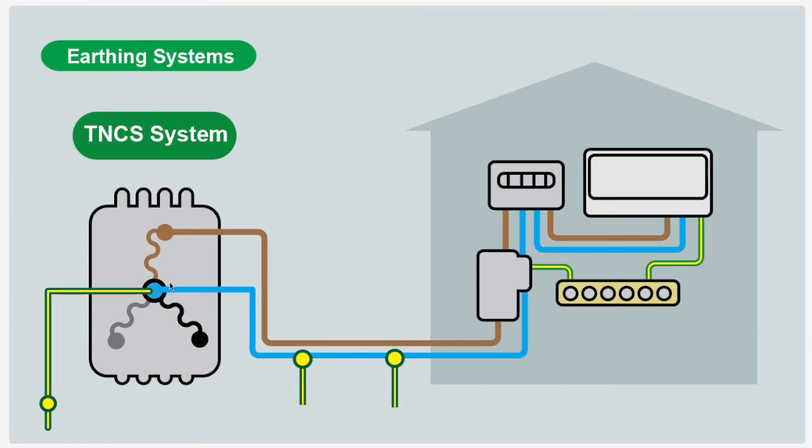The neutral is combined back at the star point of the transformer to earth as a reference to earth. So they thought they might as well use the neutral as the earth return path into the property. The earth comes along the neutral, it's combined with the neutral external to the property, and internal to the property it's separated.